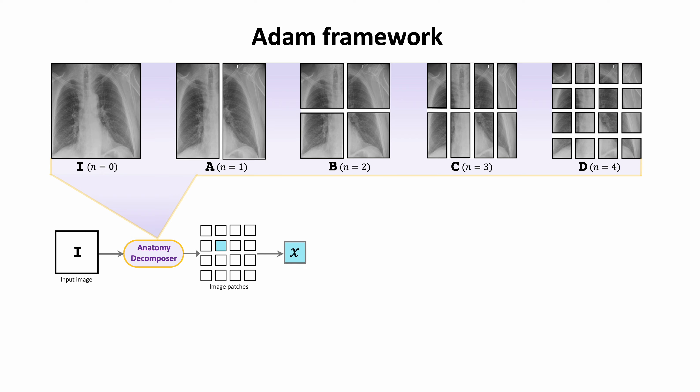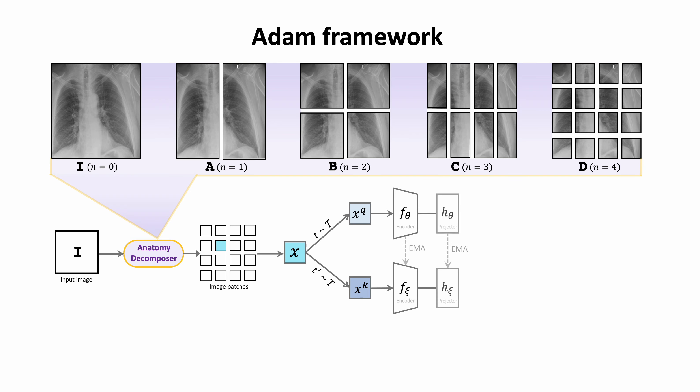Given the set of anatomical structures from the Anatomy Decomposer, we randomly sample an anchor x and augment it to generate two views, which are processed by two twin encoders and projection heads to generate latent features.